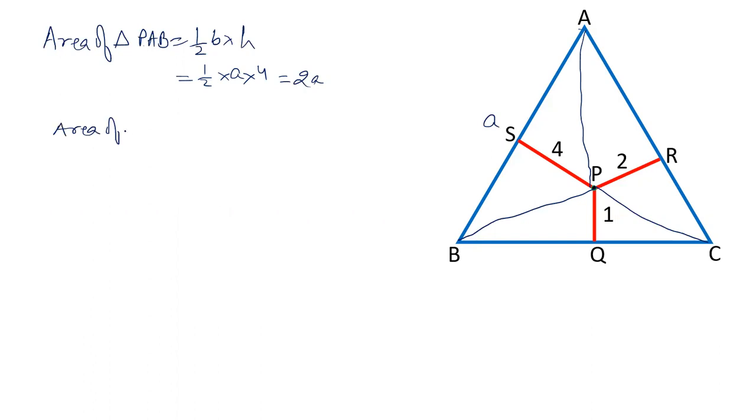Now, area of triangle PBC, that is half base into height. Base is A, height is 1. So, that is A by 2.